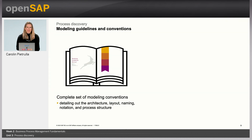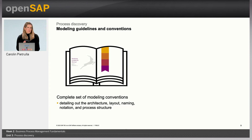Speaking of modeling conventions, once you start modeling processes, there are a bunch of topics and questions that will come up. The modeling conventions of an organization are the set of rules which should give answers to all these questions. This way, the overall quality and consistency of models can be improved even if many modelers are involved. Typically, these conventions are divided into five groups: Architecture, Layout, Naming, Notation, and Process Structure.